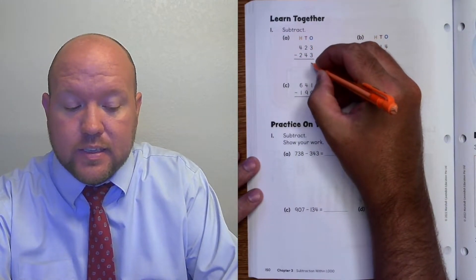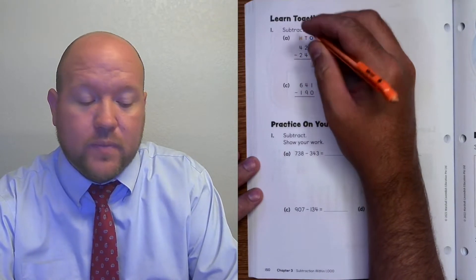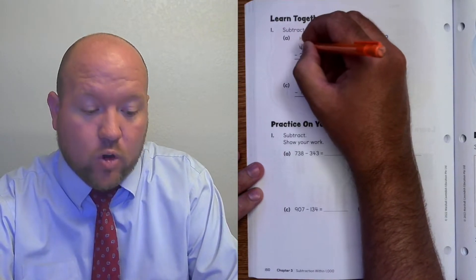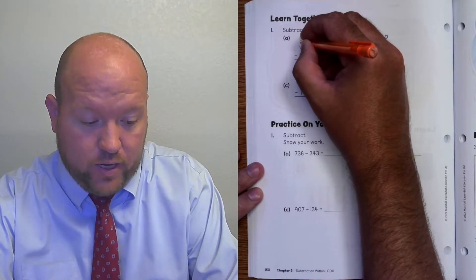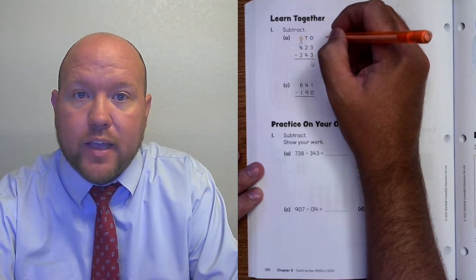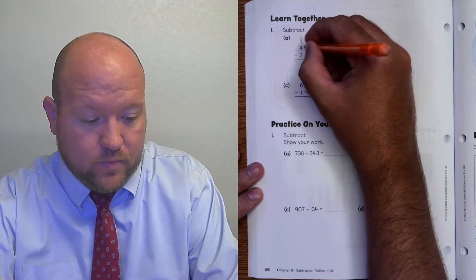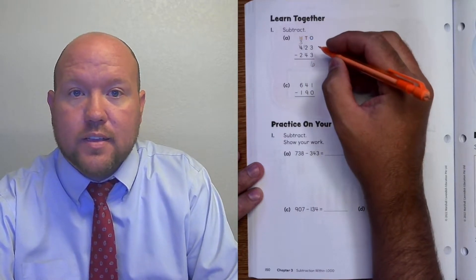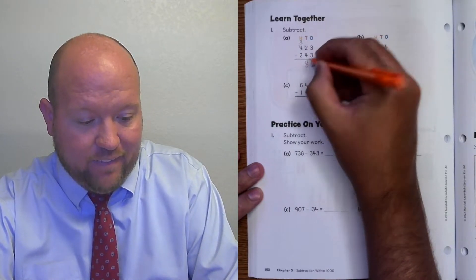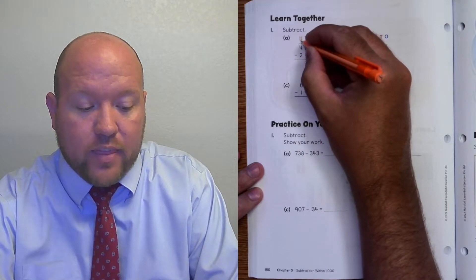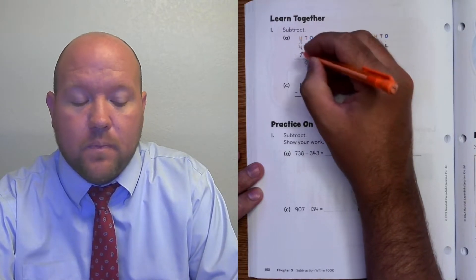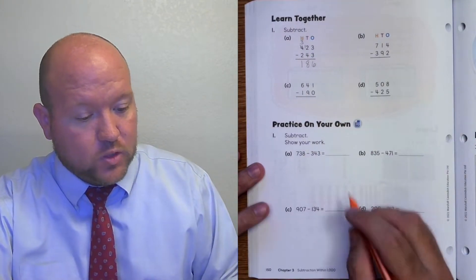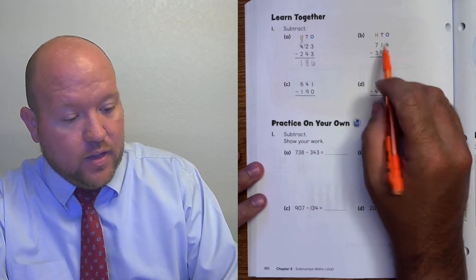3 minus 3 is 0. 2 minus 4, I need to rename. The 4 becomes a 3 and the 2 becomes a 12. 12 minus 4 is 8. And 3 minus 2 is 1. So 186.